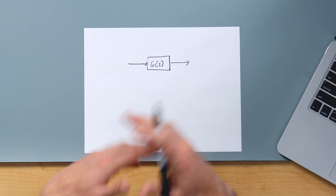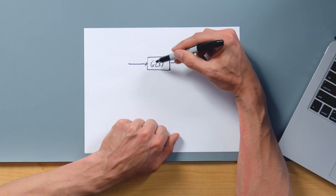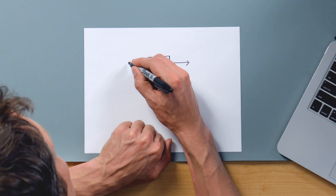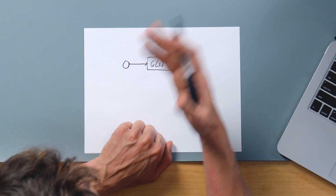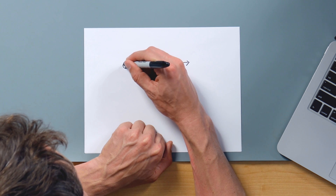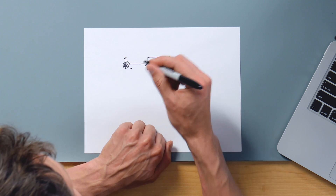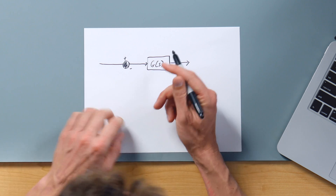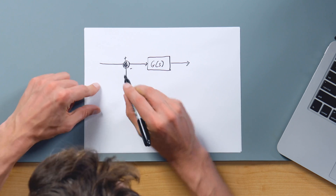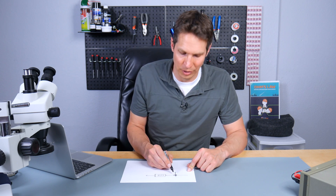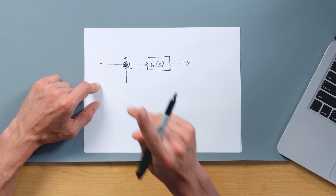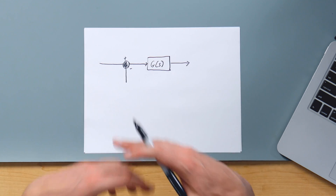So we have the block, and then we have arrows which show things going in and out. Now we start to use summing points. As we have some sort of input going into G of s, we might want two inputs. We create a circle — you can have a circle with a plus on the outside, or set it up with a plus on one side and a minus on the other. Even though it's called a summing point, you can actually subtract here. You have blocks, arrows showing inputs and outputs, and summing points where you can either add signals together or subtract them.